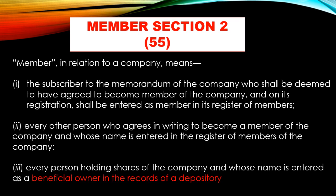Third is every person holding shares of the company and whose name is entered as a beneficial owner in the records of a depository. Suppose some company shares are in physical form — then their name is entered in the register of members.